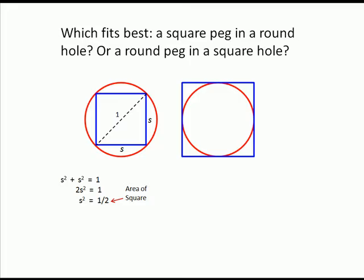Then by the Pythagorean Theorem you have s squared plus s squared equals one or two s squared equals one and s squared is a half and that's the area of the square.